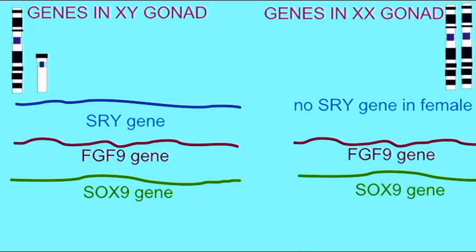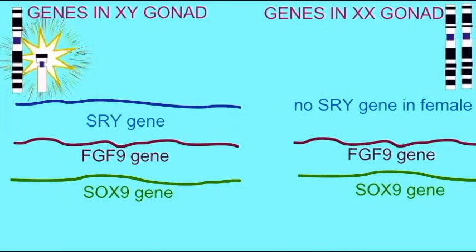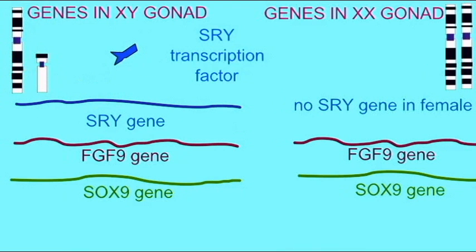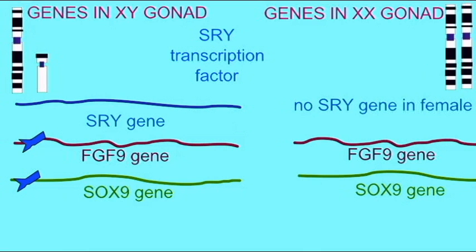The SRY gene, encoded by the short arm of the Y chromosome, is the testes determining factor, which allows the conversion of a bipotential gonad into a testis. This gene encodes a transcription factor which binds to DNA using a section known as an HMG box, and an additional tail section of the protein induces a bend in the DNA after it fits into the minor groove.